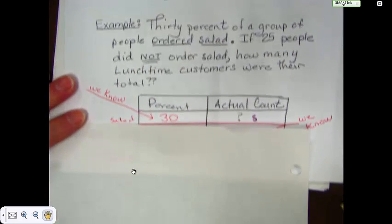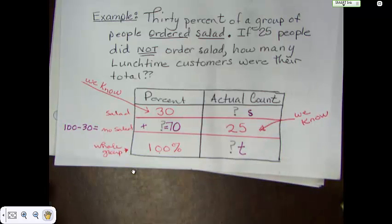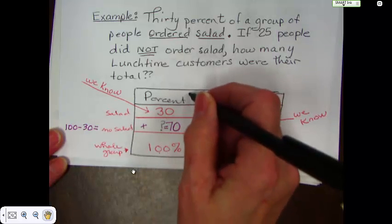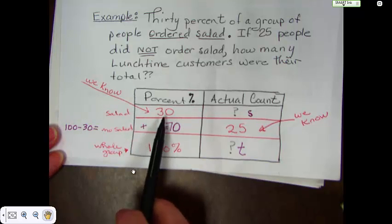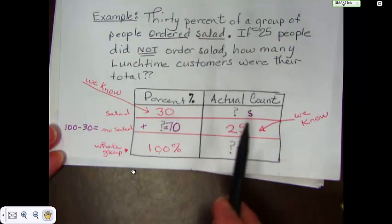So we can just set it up in a ratio box. We know we have percent would be on this side, and the actual count, actual number on the right. We know 30% of a group ordered salad. We know the total is 100%, and we know that 25 people did not eat salad.